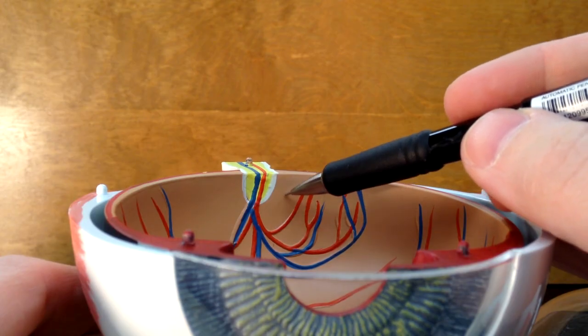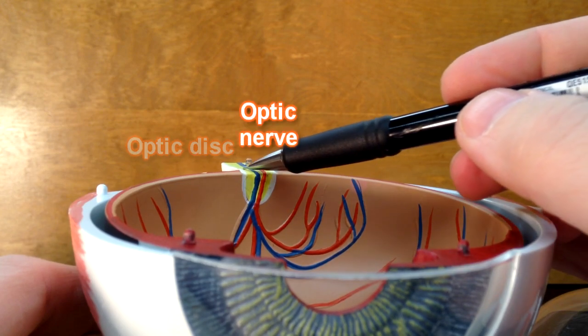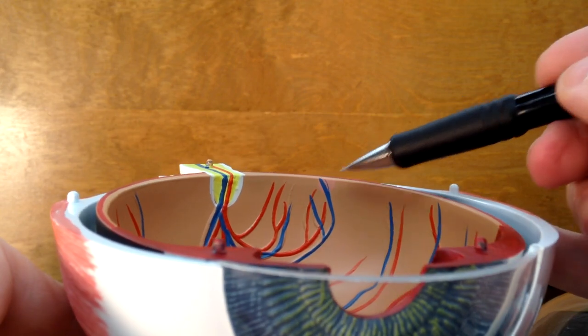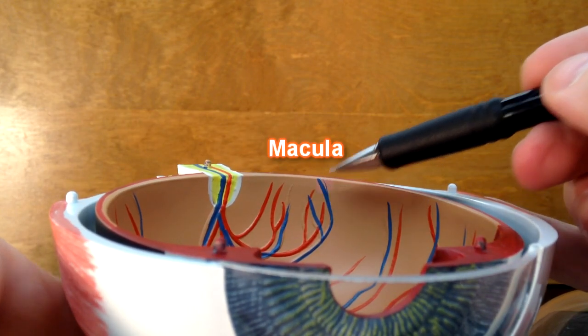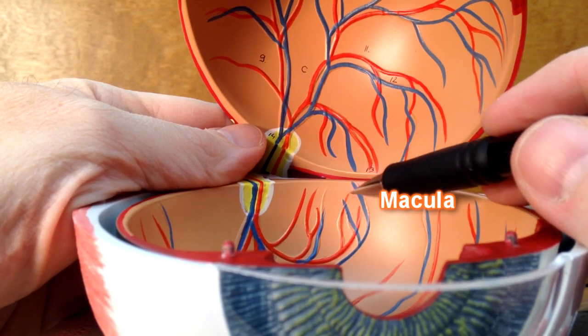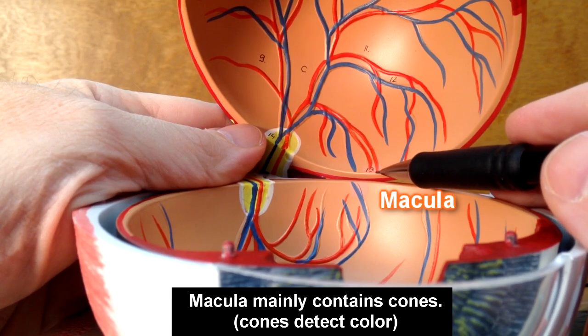And this orange layer is the retina. This would be part of the optic disc where the optic nerve would exit the back of the eye. We can see this little pink structure right here. This is the macula right here. And the macula is a part of the retina that has a high concentration of cones, which are color receptors.